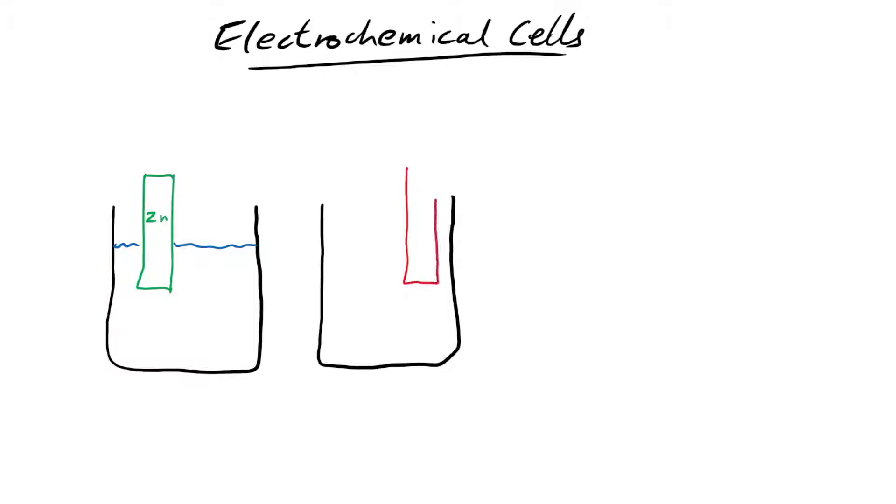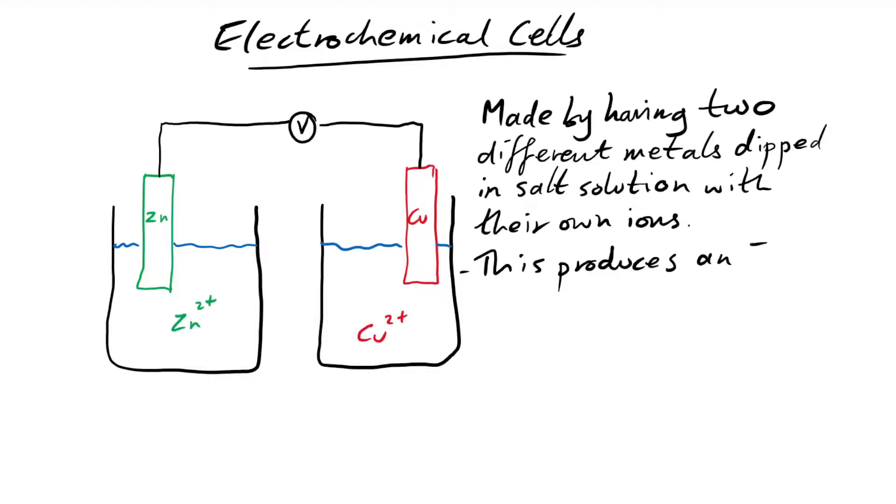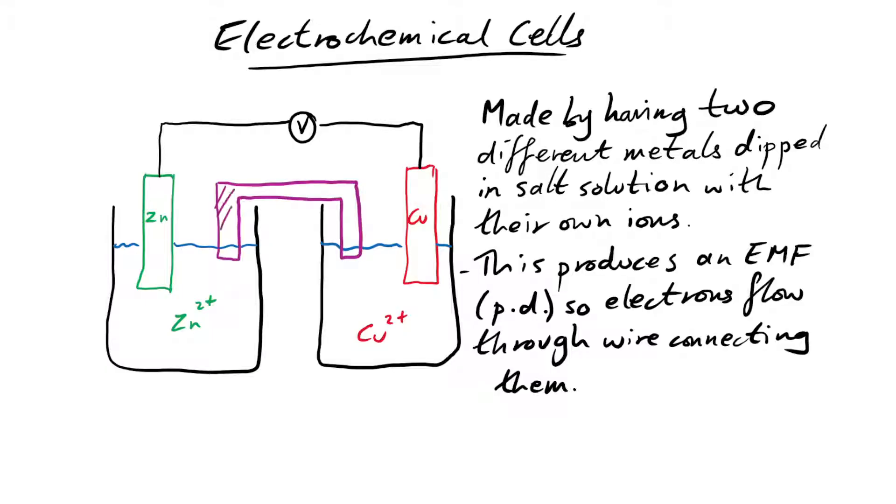The basic setup of an electrochemical cell is you have two different metals that are dipped in a salt solution of their own ions. This produces an EMF or an electromotive force. That's just a posh name for a potential difference or a voltage that actually causes current to flow. So that means electrons flow through the wire that is connecting the two metals or the two electrodes.